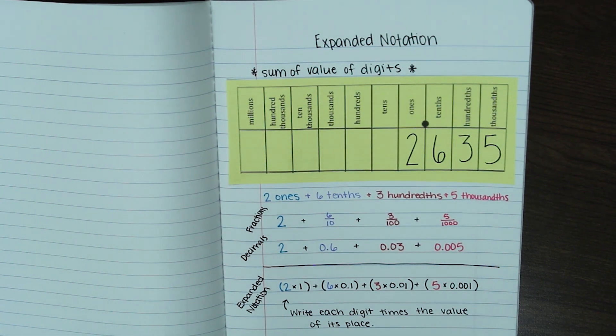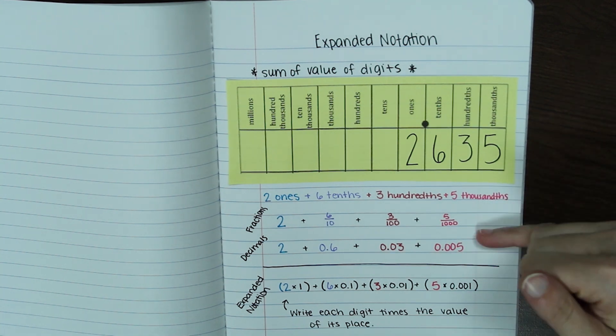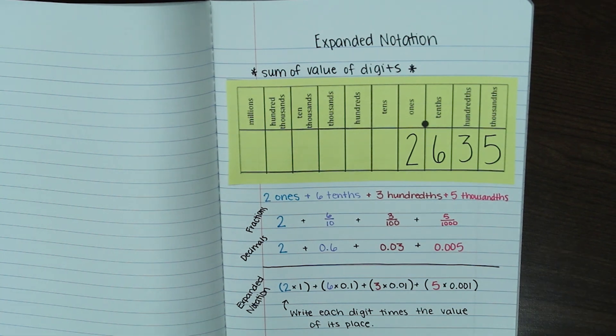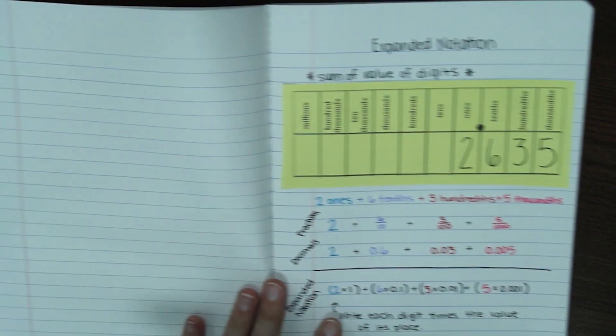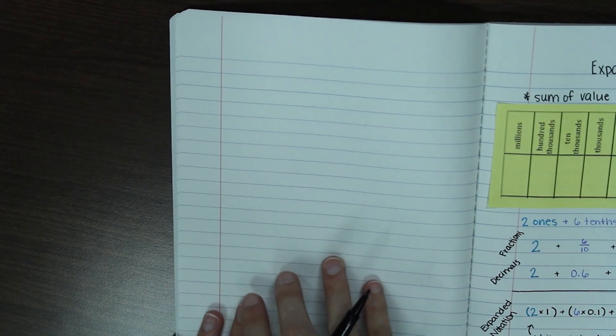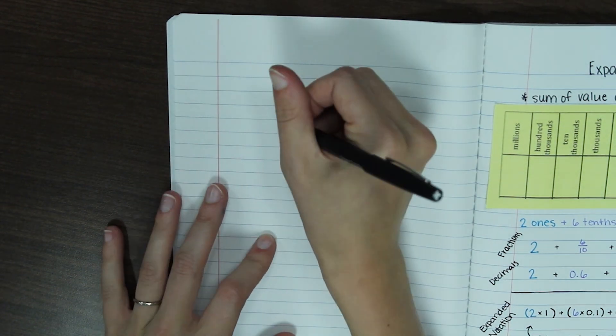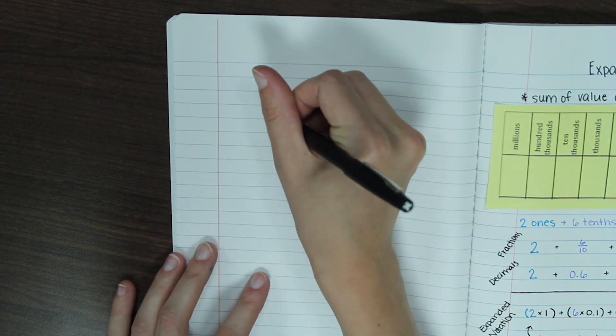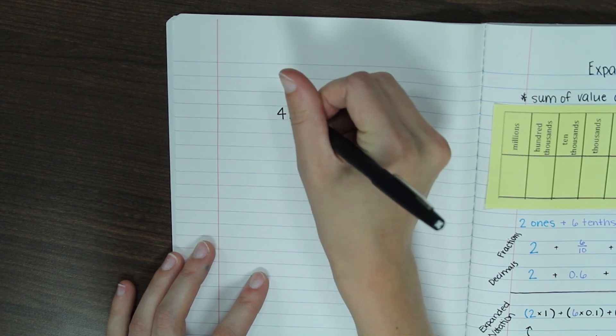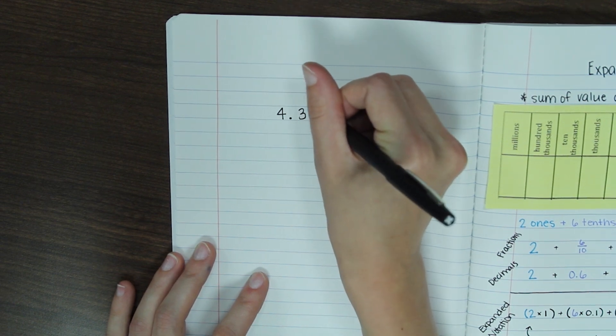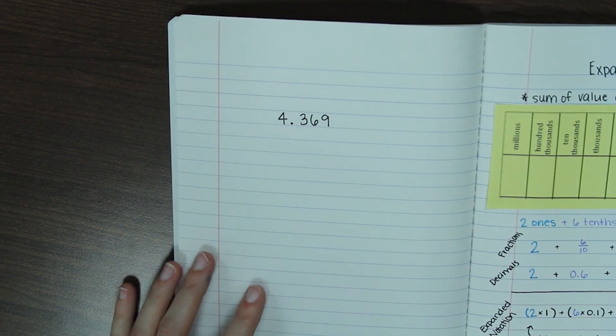I'm going to give you one number to put over on your left side for you to try. Try writing it in words, fractions, decimals, and then expanded notation. So your number is going to be similar to this one. We'll do four and three hundred sixty-nine thousandths. Good luck.